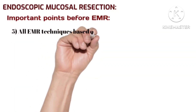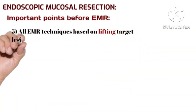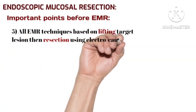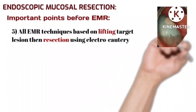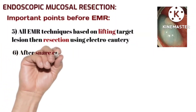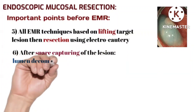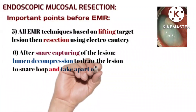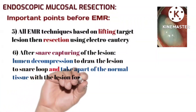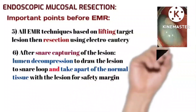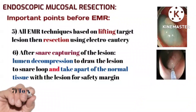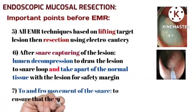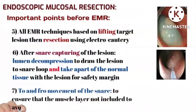All EMR techniques are based on lifting the target lesion, then resection using electrocautery. After snare capturing of the lesion, lumen decompression is performed to draw the lesion into the snare loop and to include a margin of normal tissue for safety. A to-and-fro movement of the snare ensures that the muscle layers are not included, to avoid perforation.